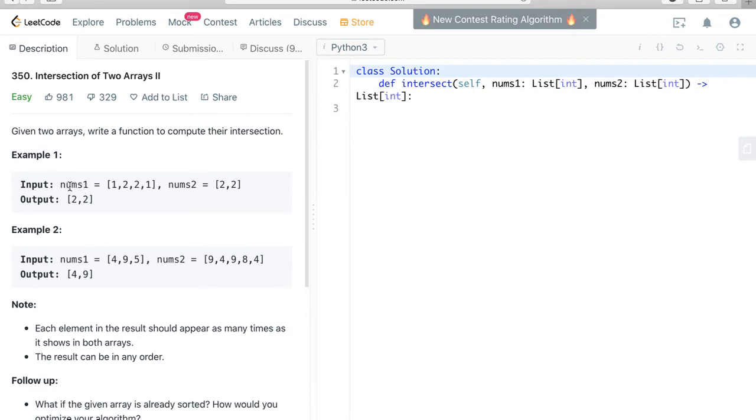Example 1: nums1 equals [1, 2, 2, 1], nums2 equals [2, 2], and the output is [2, 2] because that's the intersection of the two arrays.